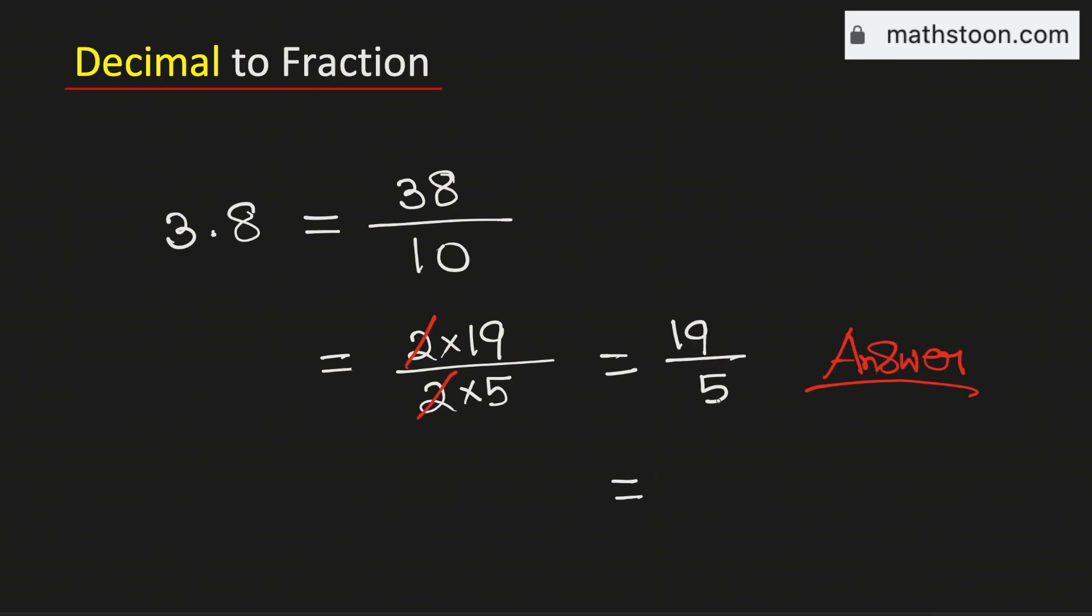Now we know that 5 goes into 19 by 3 times and 4 is left over and divide it by 5. Therefore 3.8 as a mixed number is equal to 3 and 4 fifths.